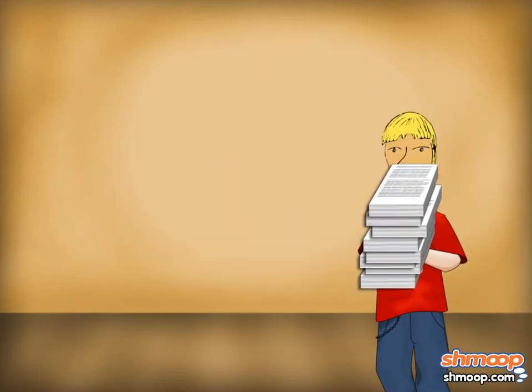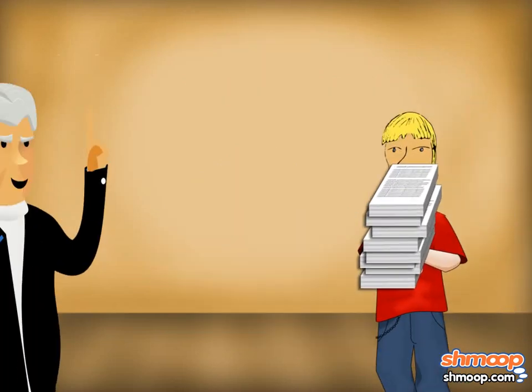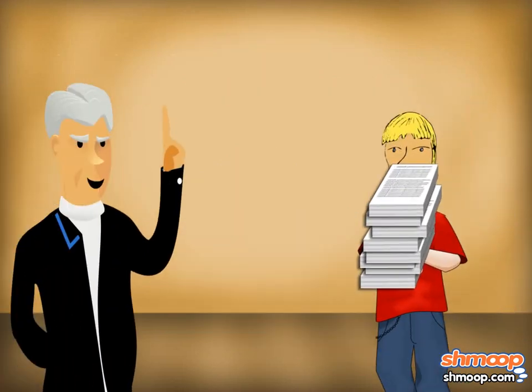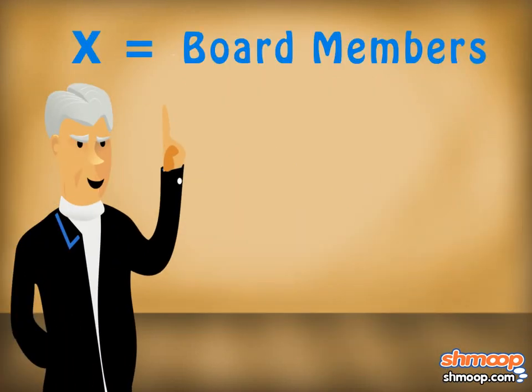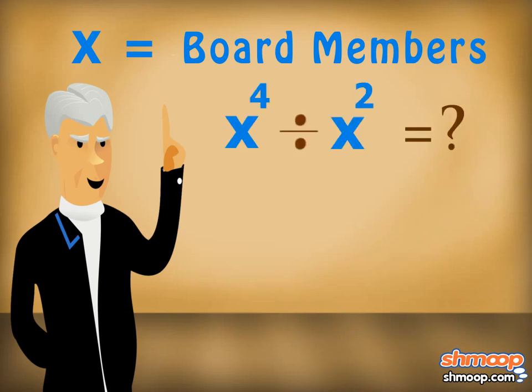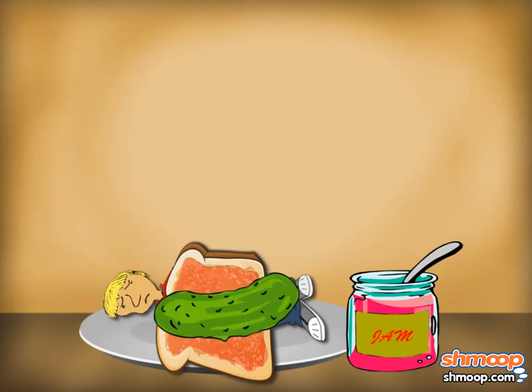Just as Shelton delivers the copies, the boss tells him he changed his mind. Instead, he wants enough handouts for each board member to the power of 4, divided by the number of board members to the power of 2. This puts Sheldon in a pickle.